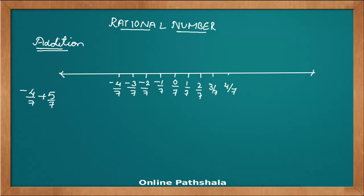We have to add 5 by 7 to minus 4 by 7. Minus 4 by 7 is here. To add something positive to it, the rule is we move towards the right hand side. So we add 1 by 7, 2 by 7, then 3 by 7, 4 by 7, and we jump here — we have jumped a complete 5 by 7 — and the answer we get is 1 by 7.